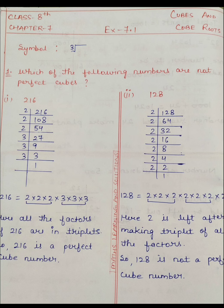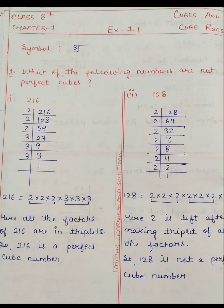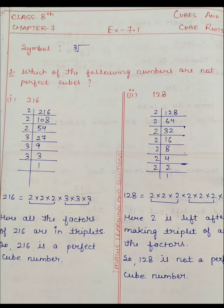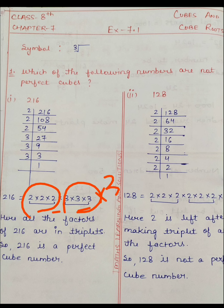Triplet means 3 numbers का pair। यहाँ पर 2 के triplets complete हो रहे हैं क्योंकि 2 तीन times है। और 3 भी 3 times है, यानि 3 का triplet भी पूरा हो रहा है। All the factors of 216 are in triplets, so 216 is a perfect cube number। अगर triplet के बाद कोई factor extra रह जाता तो वो number perfect cube नहीं होता।